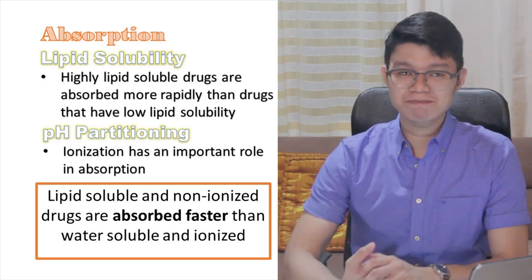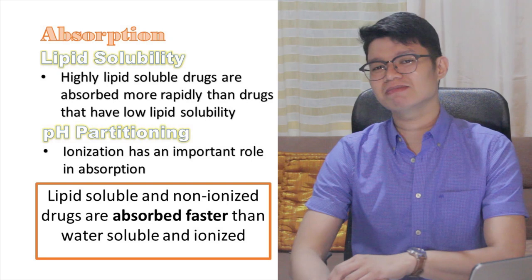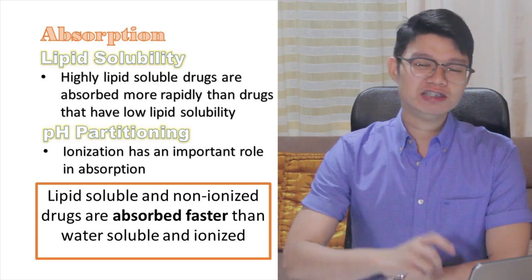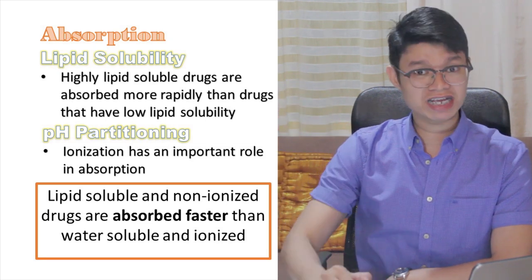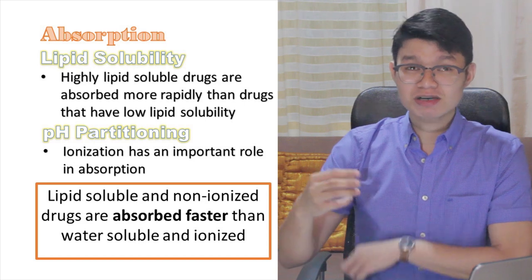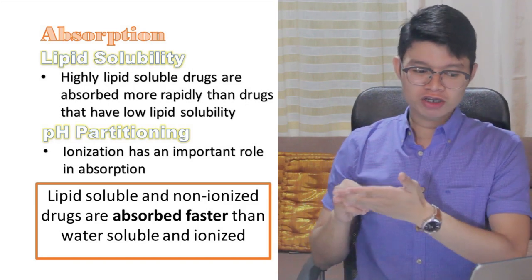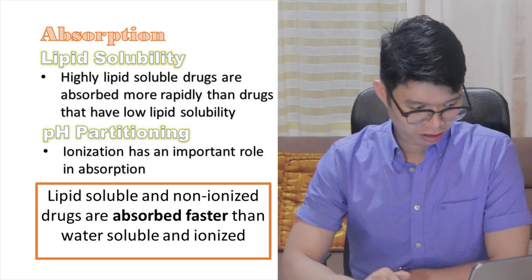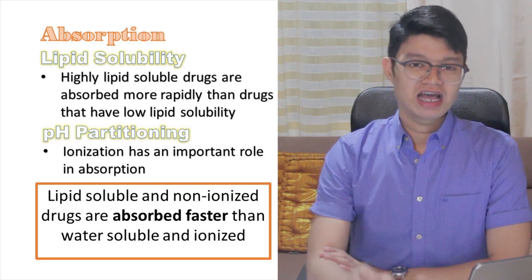Next: lipid solubility and pH partitioning. Your gastrointestinal lining is basically composed of a phospholipid bilayer — essentially fat, lipid. So if a particular medication is lipid soluble, it will simply pass through that semi-permeable layer easily. Highly lipid-soluble drugs are absorbed more rapidly than drugs that are low in lipid solubility. The last concept is pH partitioning. Picture yourself at an exclusive nightclub — everyone is dressed similarly, but you stand out in professor-like attire. Based on movies, people who stand out are not allowed in. Similarly, medication that stands out of its nature is absorbed more slowly.